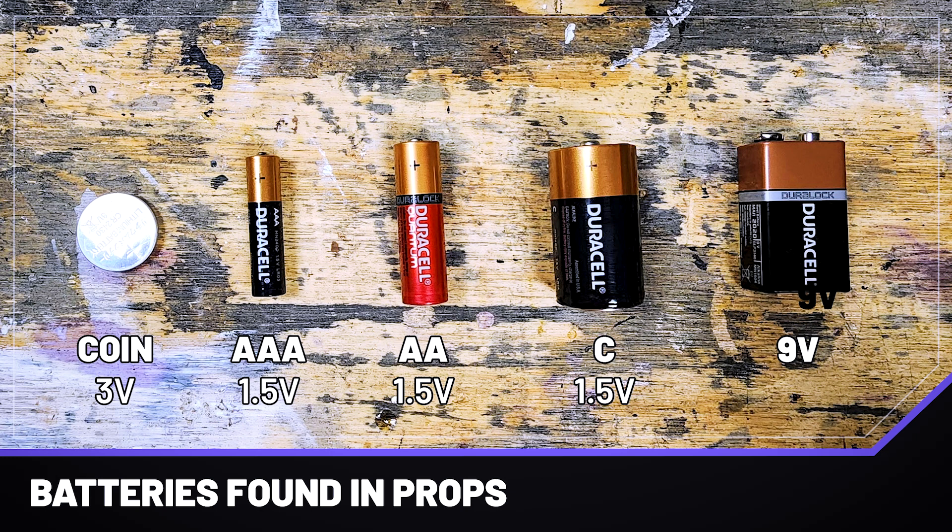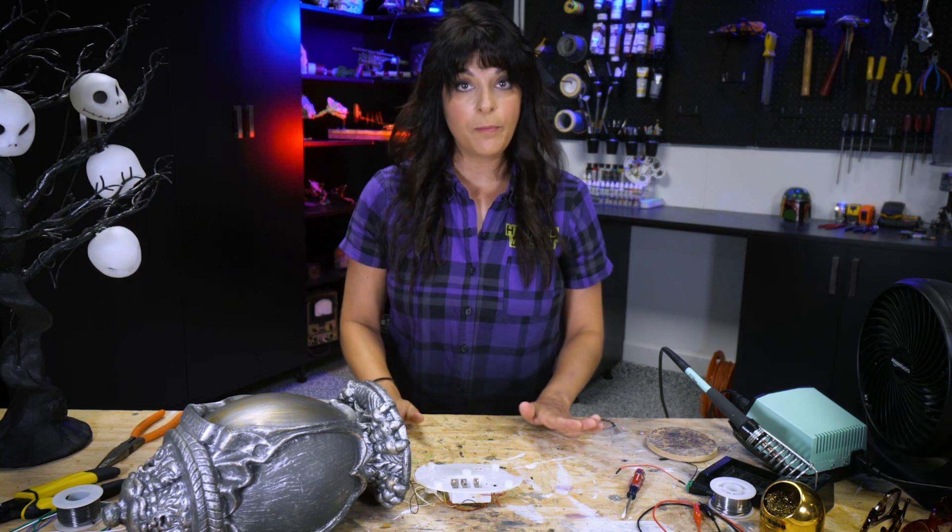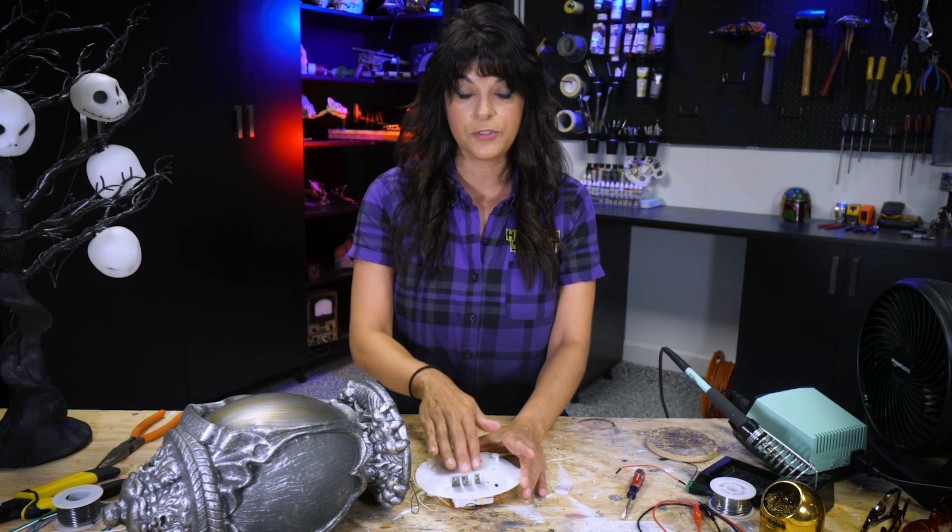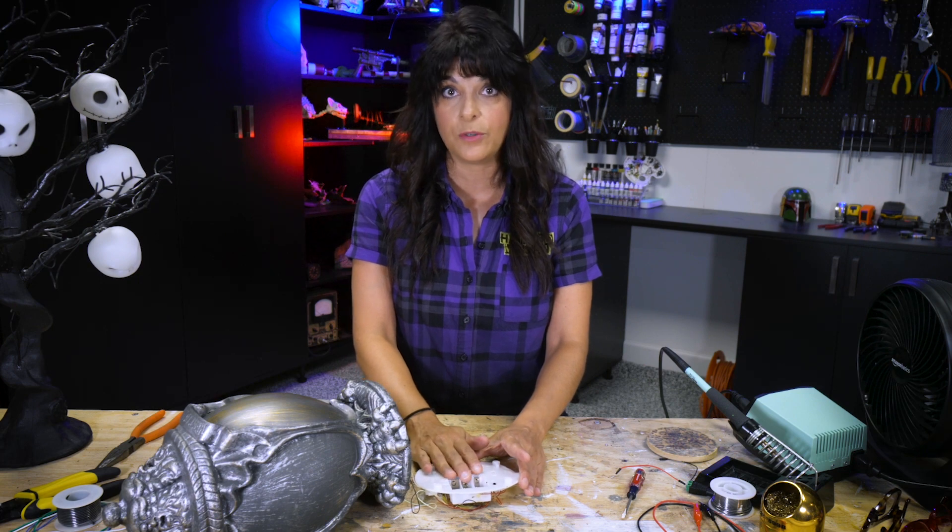Your triple A's, your double A's, your C's, all of those are cell batteries. They're all going to be 1.5 volts. So what's up with the size? So the bigger the size, the more capacity it has. That means it's got more energy to deliver, which means it can run more things on your prop and it can run your prop for a longer period of time. No matter your battery size, if it's a cell battery, it's going to be 1.5 volts. So we know we need 4.5 volts.